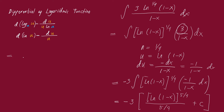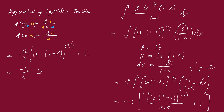Simplifying: negative three multiplied by four over five gives negative 12 over five, multiplied by ln(1 minus x) raised to the power of five over four, plus c. You can also write the exponent as five over four explicitly: negative 12 over five times the natural logarithm of (1 minus x) raised to five over four, plus c. Note that (1 minus x) is the argument of the logarithmic function. This is our final answer.